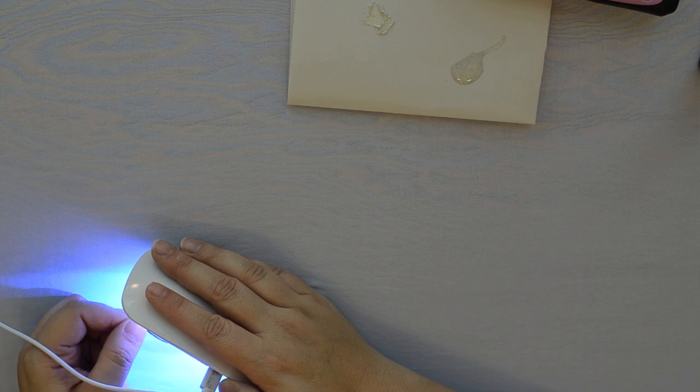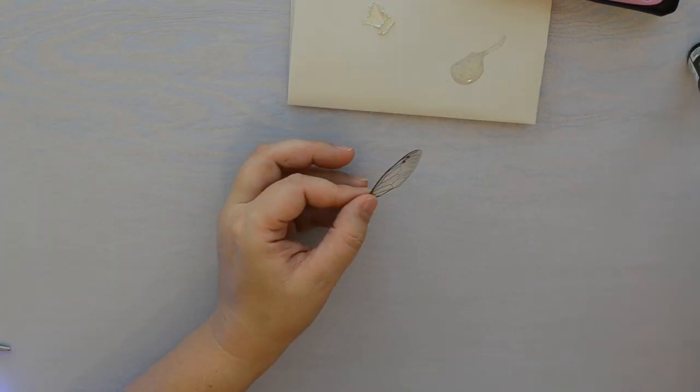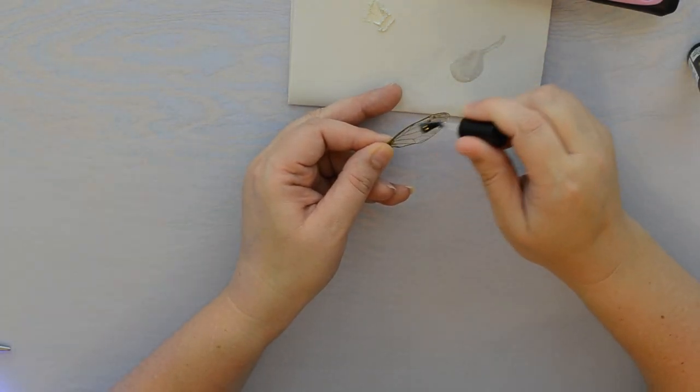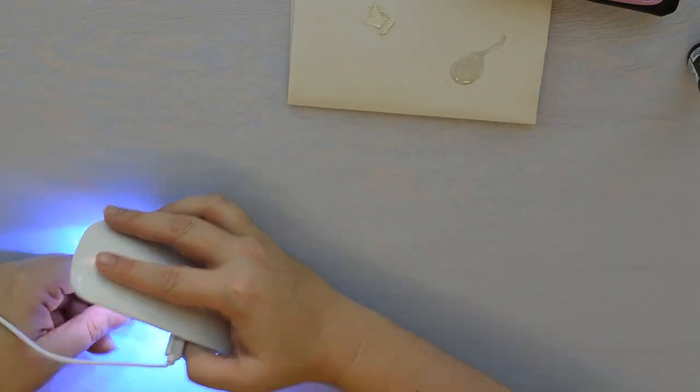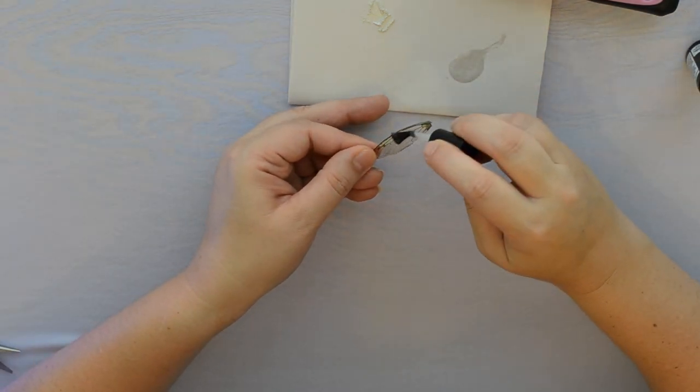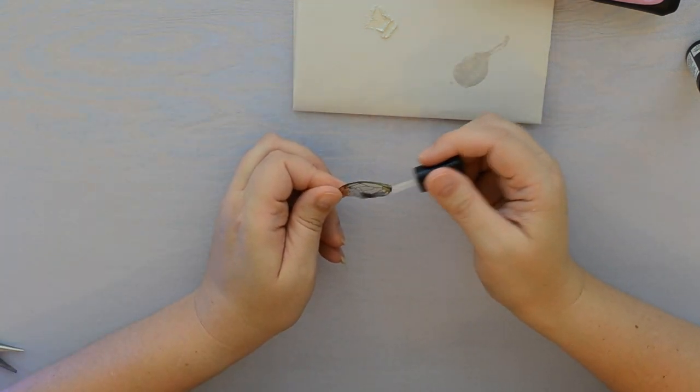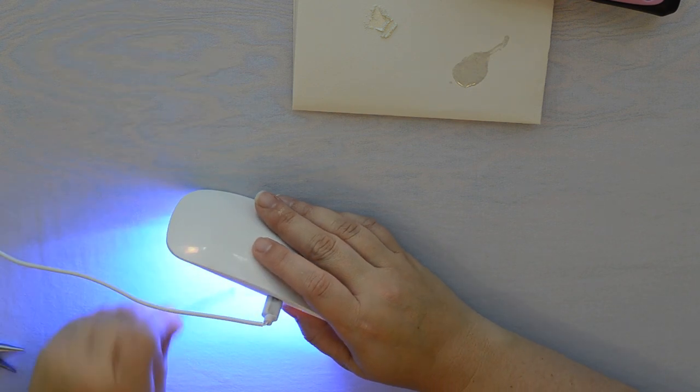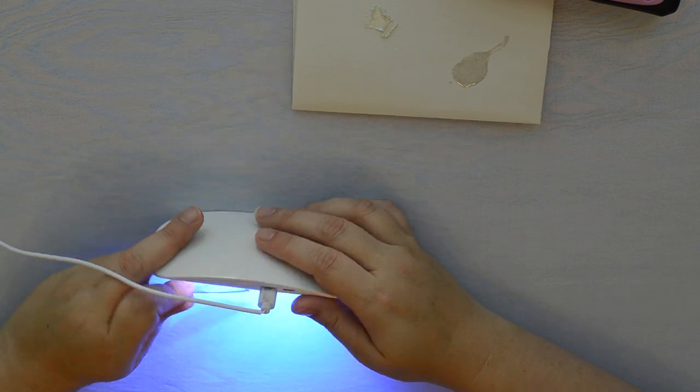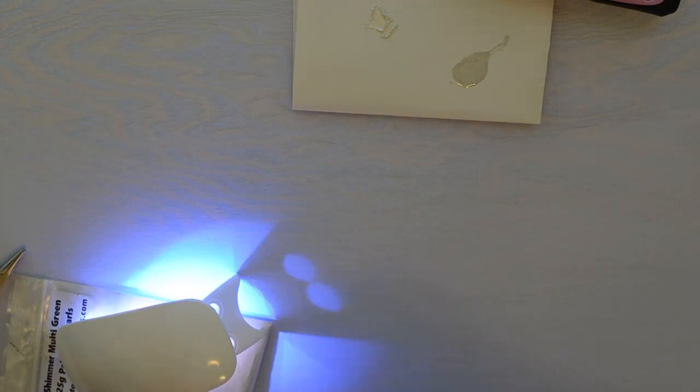Once we've got that dry, I like to do another two to three coats. This is totally up to you, but the more coats you do the more sturdy it's gonna be to hold up against if you drop it or anything like that. Make sure that you're getting that other side of the wing that you were previously holding with your fingertip. So after we've got our few layers dry, we're gonna prep our necklace and get the bail and jump ring